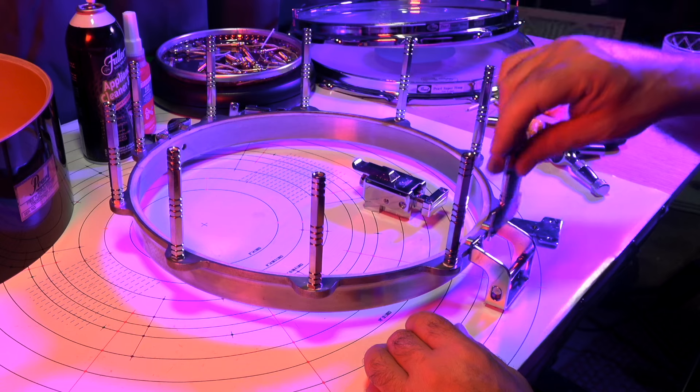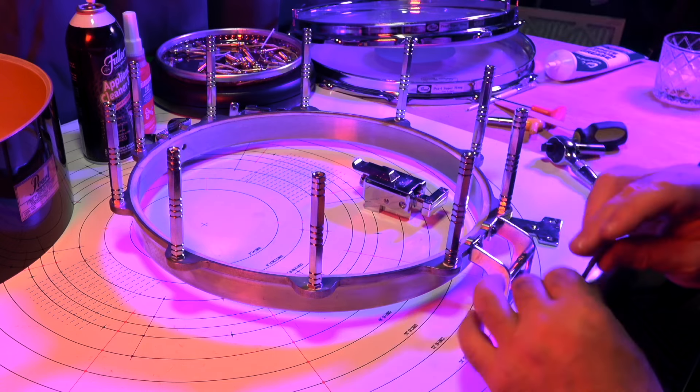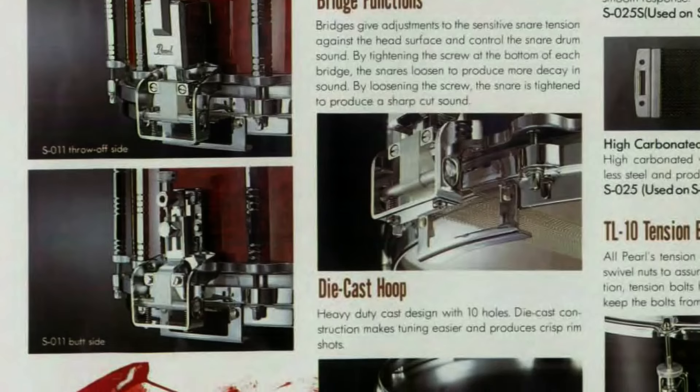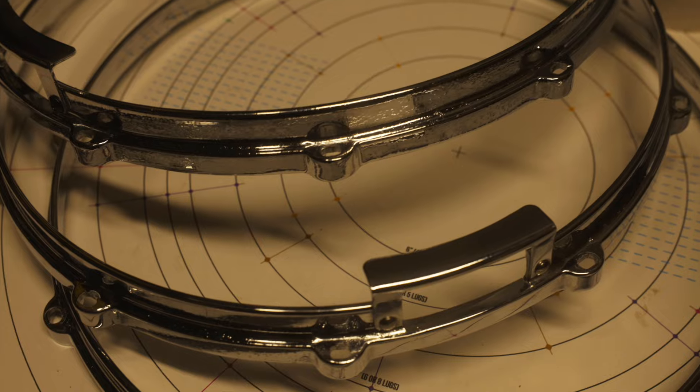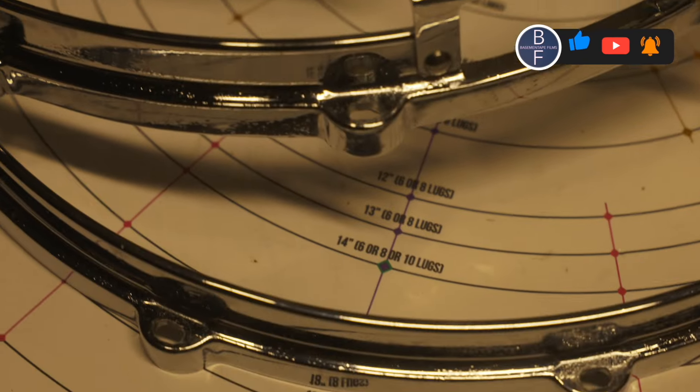Here you can see the mistake I made by adding the snare adjustment before adding the mounting plate to the hoop. This drum originally came with die cast hoops. I don't care for die cast hoops—they get pitted, they're heavy, and I don't like how they sound.